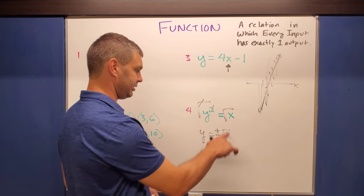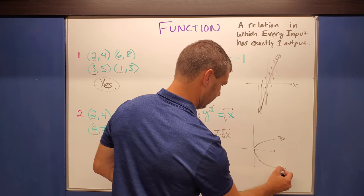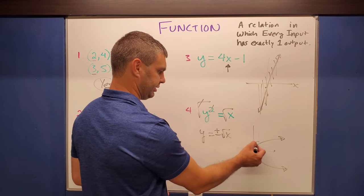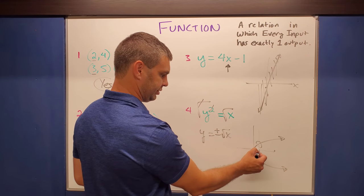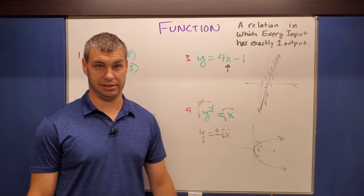In fact, the graph of this looks something like that. And the vertical line test there, like if I were to put in x is 1, maybe it would give me two different outputs. And therefore this would not be a function.